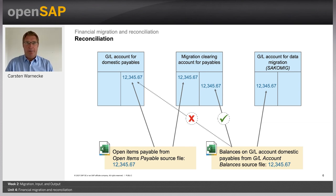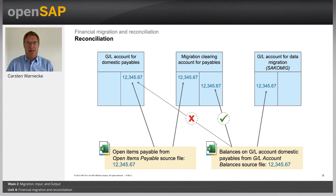I will show you this in the demo. Migration of the open item source file posts the value to the GL accounts for domestic payables and to the migration clearing account for payables. The sum of open item payables is also migrated with the GL account balance source file, posting the same sum to the other side of the migration clearing account and to special GL accounts for data migration — avoiding the same sum being posted twice. You should check the quality of the data migration for all activities and compare your legacy system data with what has been migrated to SAP Business by Design.